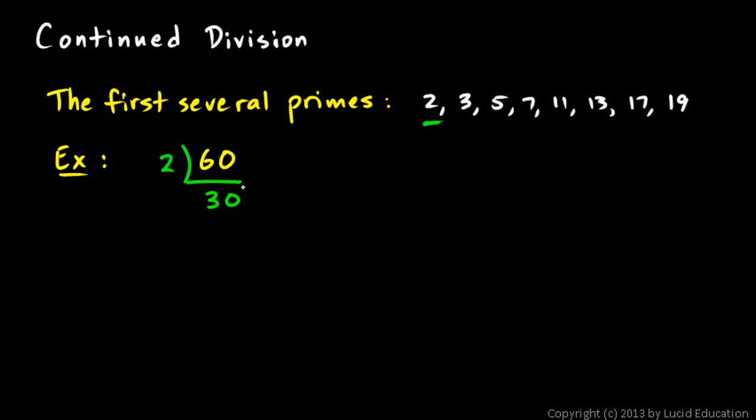And the only reason I do it that way is because we typically write down the page from top to bottom, and so this allows us to work down the page, because I'm about to do it again with 30. Is 30 divisible by 2? It is. 30 is 2 times 15.